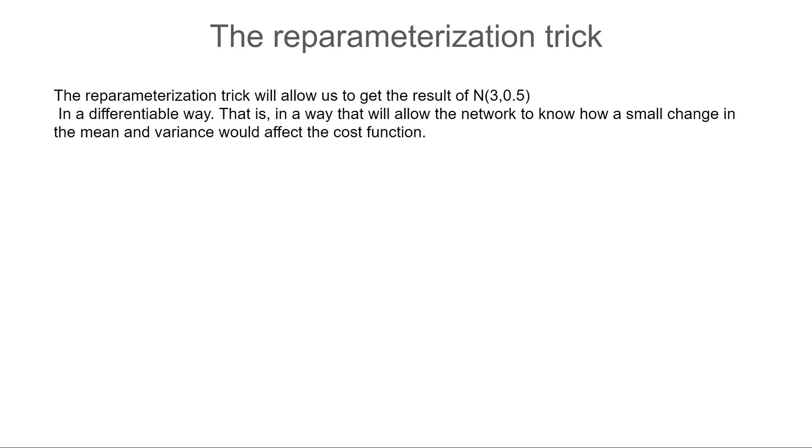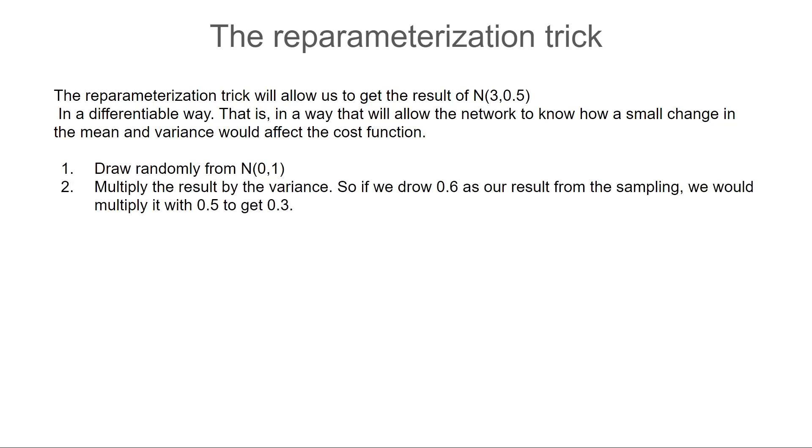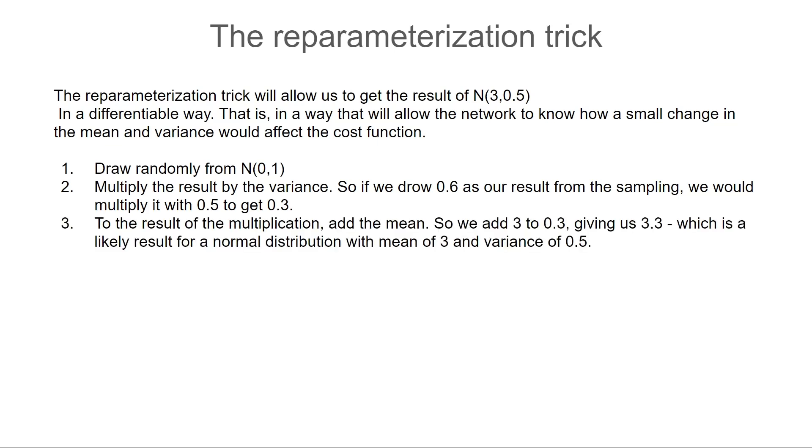In order to get around this problem, we use the reparameterization trick. This trick has two stages that I will first explain and then talk about why this works. One, we draw randomly from a normal distribution with mean zero and variance of one. We multiply the result by the variance, so if we drew 0.6 as a result from the sampling, we would multiply it with 0.5 to get 0.3. And then we take the result of the multiplication and add the mean, so we add 3 to 0.3 giving us 3.3, which is a likely result for a normal distribution with mean of 3 and variance of 0.5.